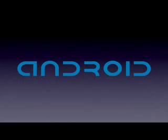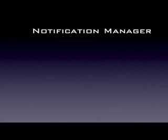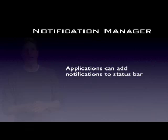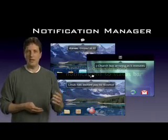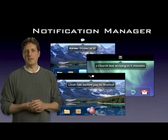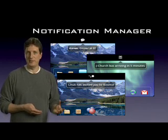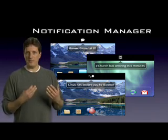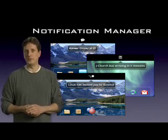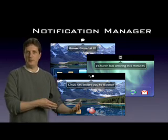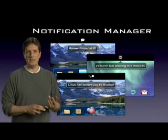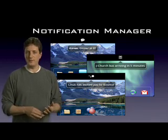The next API is one of my favorites. It's called the Notification Manager, and it allows any application to put a notification into the status bar. We use the status bar for things like SMS notifications, voicemail notifications, all of the typical things you'd expect to see on a phone. However, we make that same facility available to any application, so that means that developers can have the same power to alert the user to interesting events as what have traditionally been built-in applications. This has a lot of benefits. First, it means that all notifications have a consistent presentation.